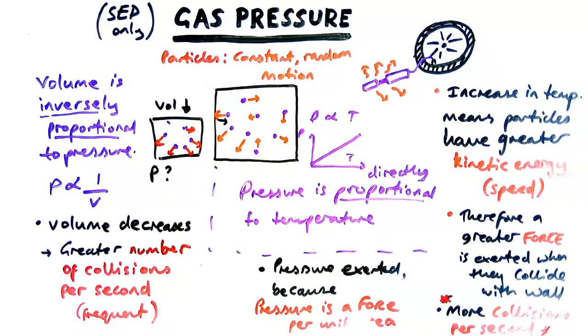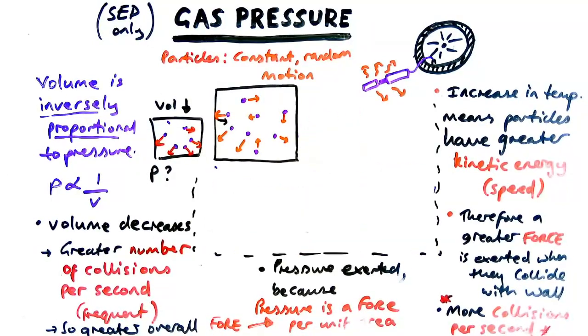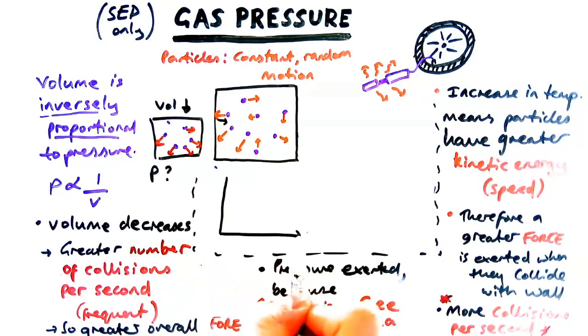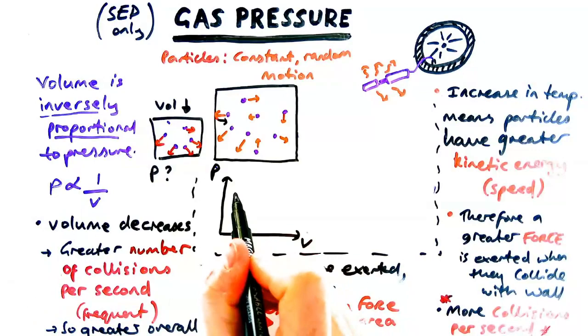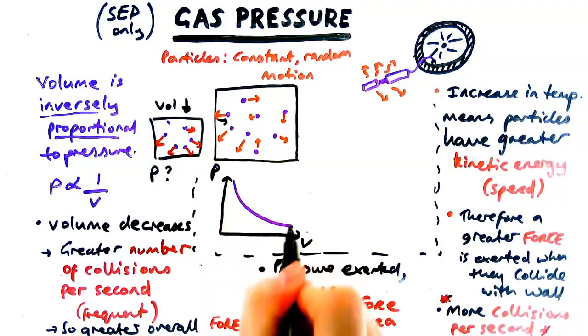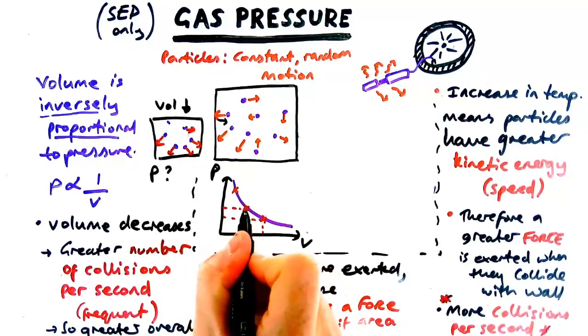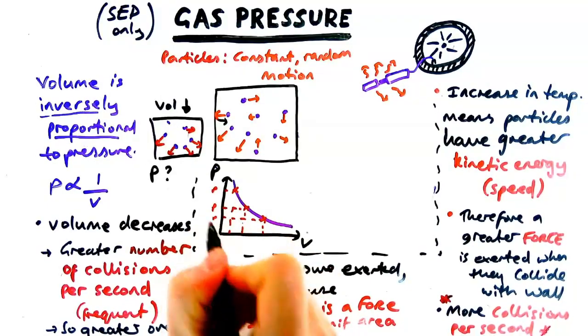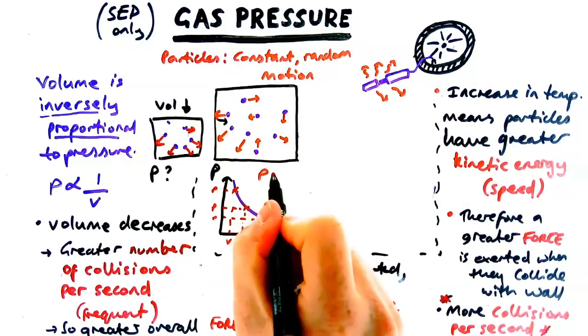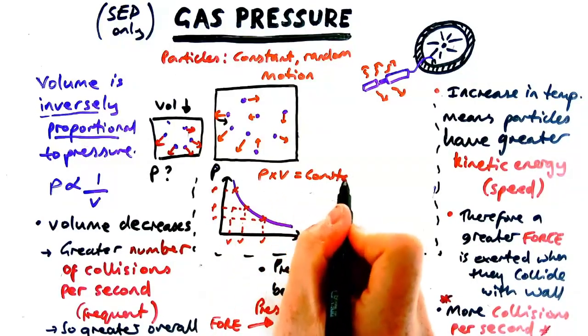So with more collisions that means there's a greater overall force. Greater force means that there's a greater pressure because pressure is force per unit area. Now the graph for something that's inversely proportional is a downwards curve not a straight line downwards curve like this. And what you'll notice if you look up all the points of pressure and volume at different points on your graph is that when you multiply the pressure times the volume together it is constant. Constant meaning the same.